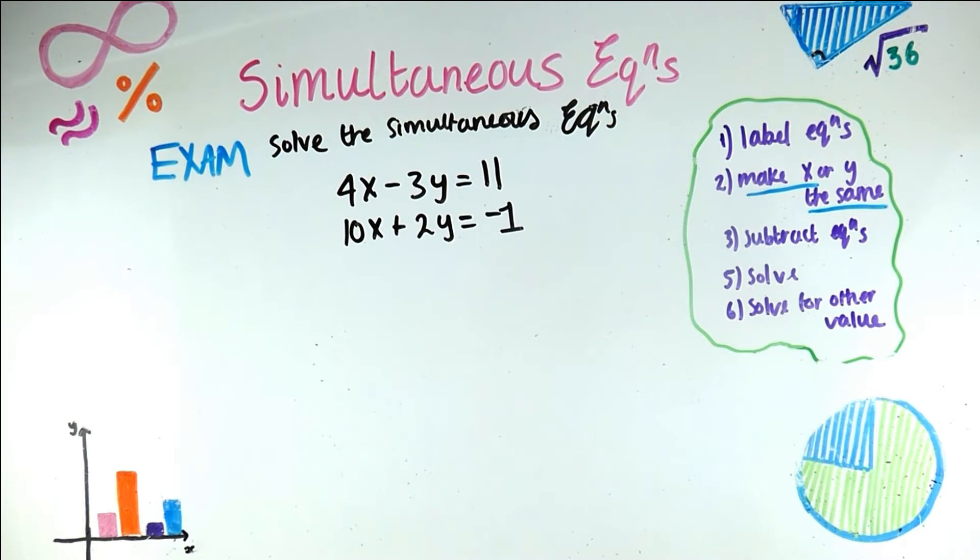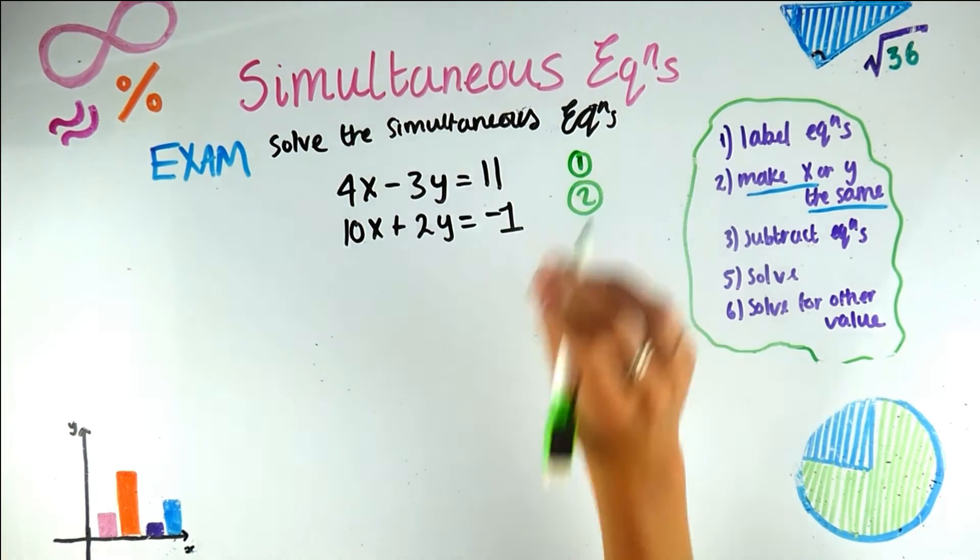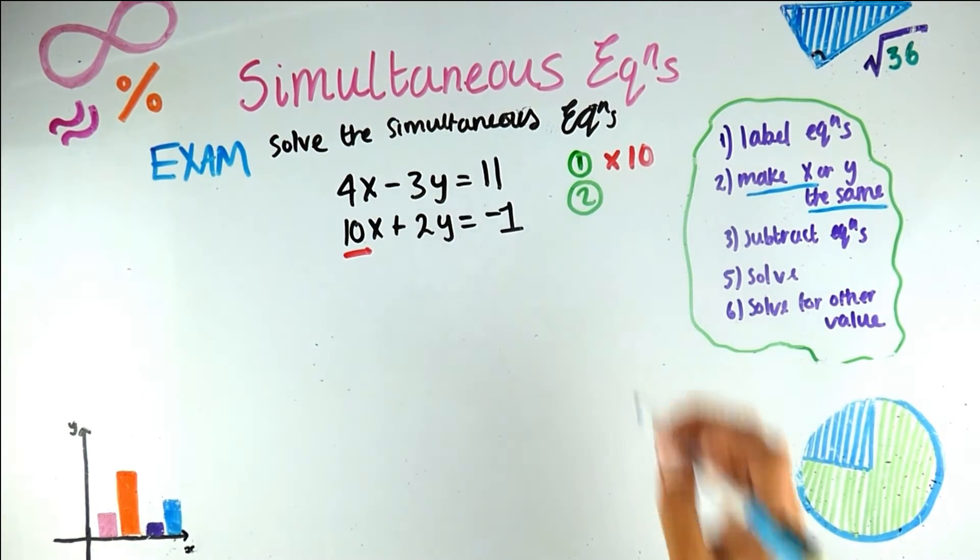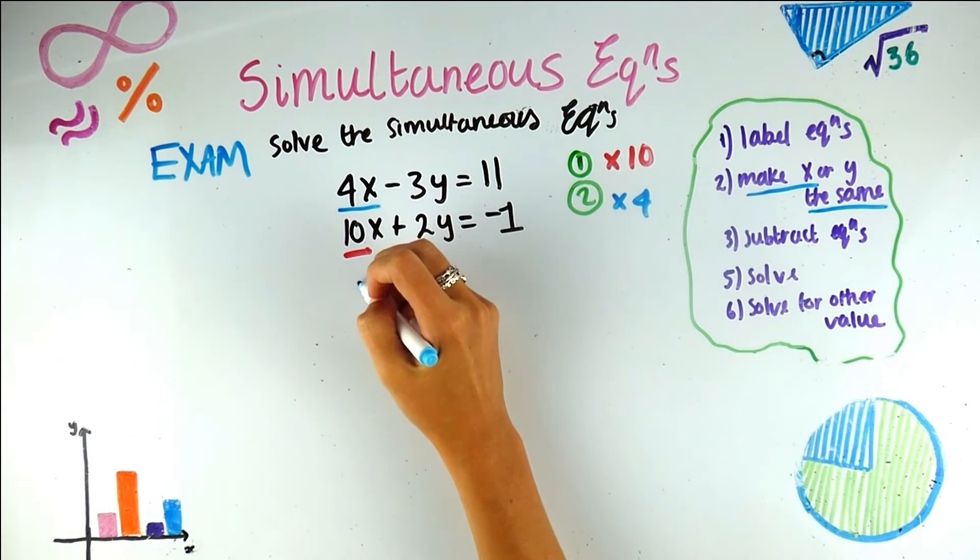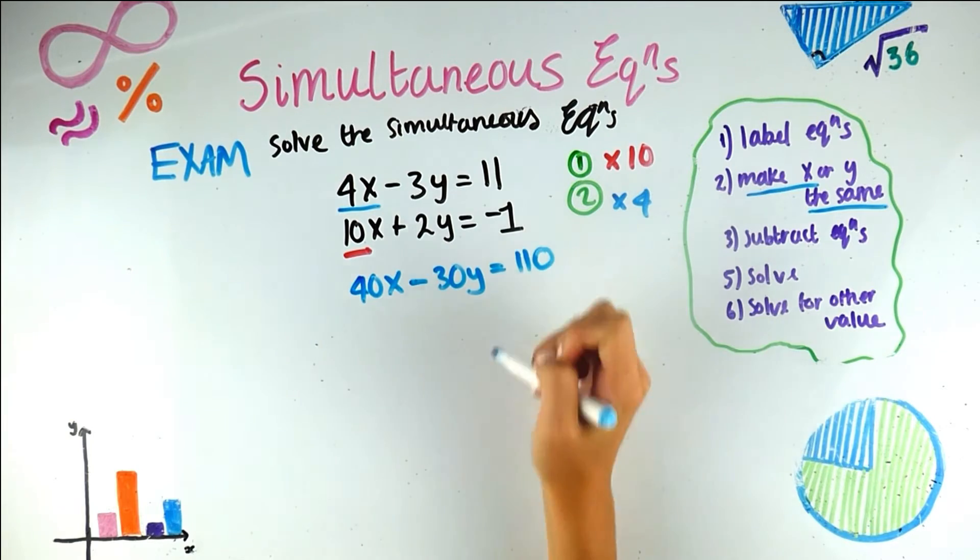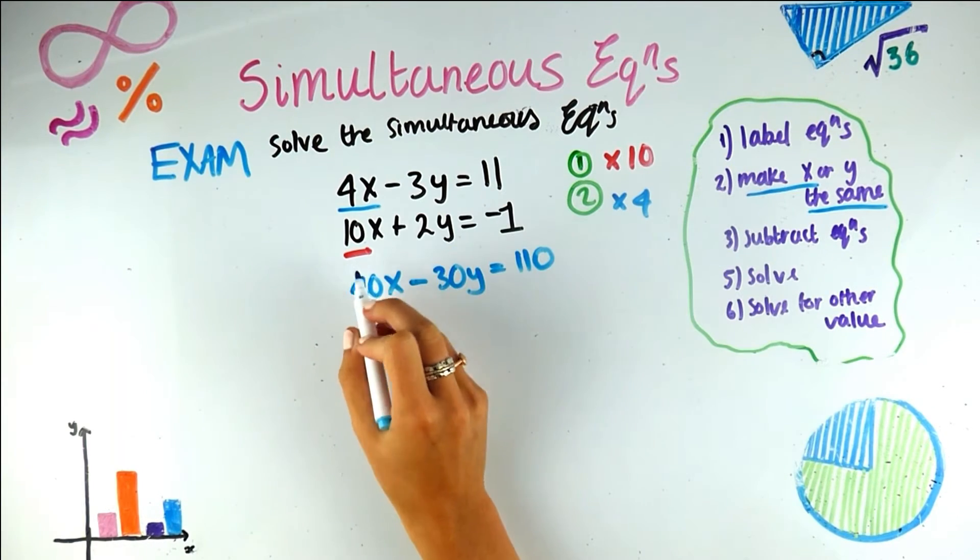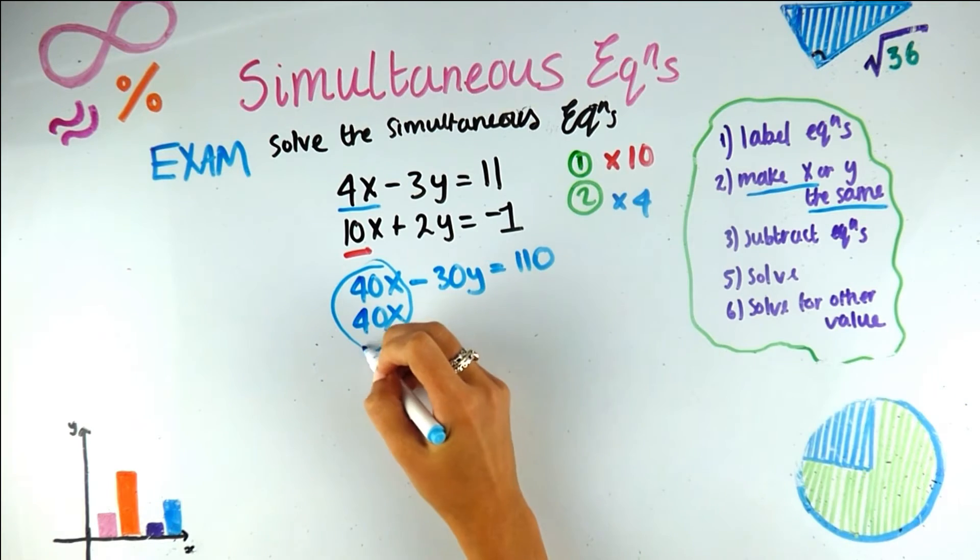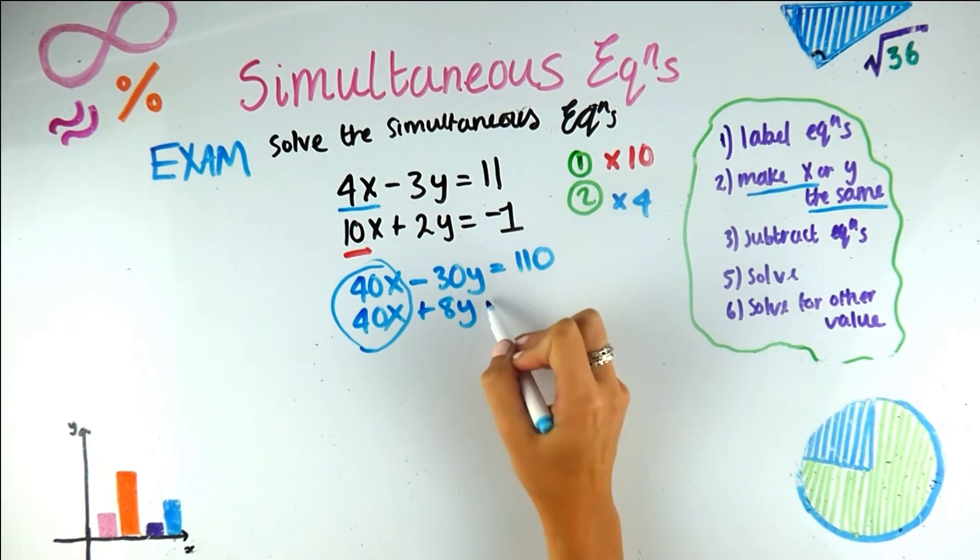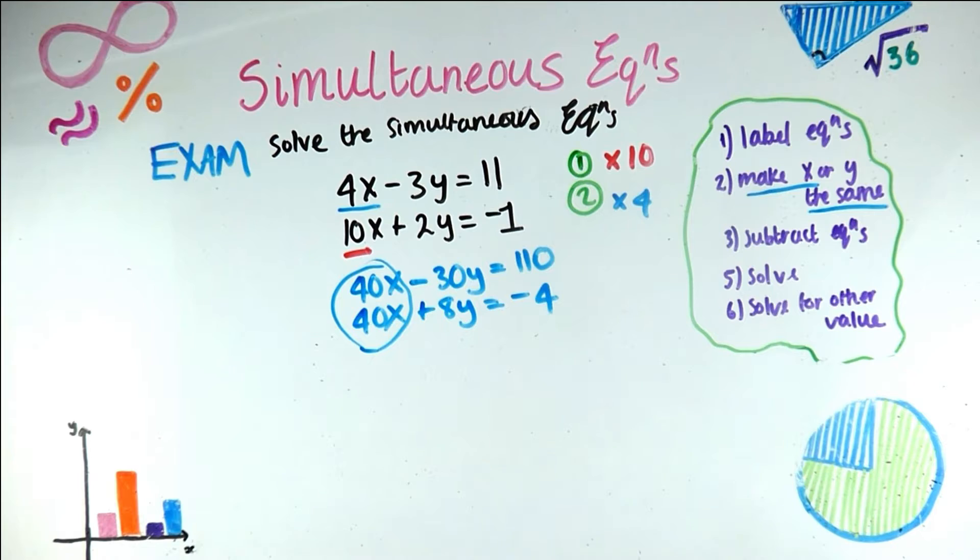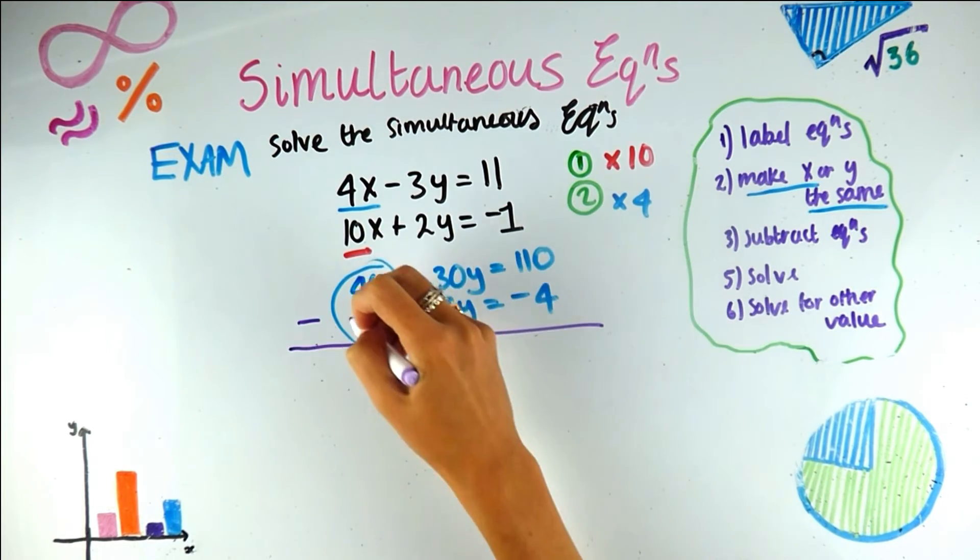So let's do one more exam question. So this is our final example of this type. So firstly, label the equations 1, 2. Our second step was make the x's the same. So that is where I have to multiply the first one by, in this example 10, and multiply the second one by, in this example, 4. So let's do that. Equation 1 times 10. 4x times 10 is 40x. Minus 3y times 10 is minus 30y. And 11 times 10 is 110. This one by 4. 10x multiplied by 4 is 40x. So we've made the x's the same, which was what the point was. 2y times 4 is 8y. And minus 1 times 4 is minus 4. Our next step was to subtract the equation. So with the purpose of eliminating this x that we don't have to then deal with. So we only have one unknown.